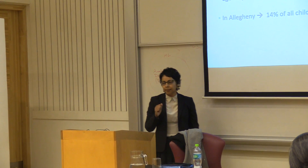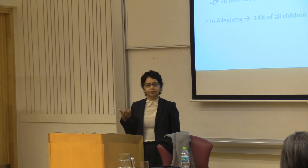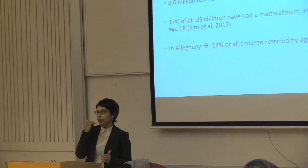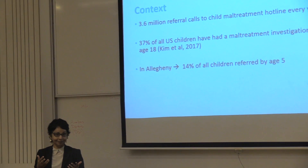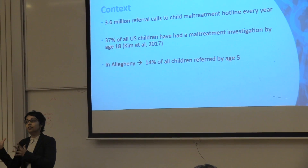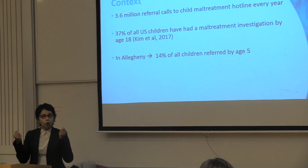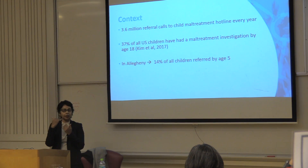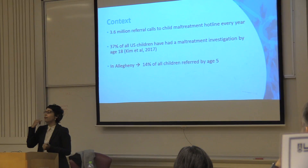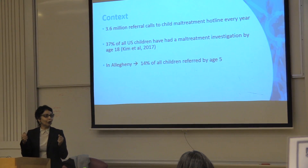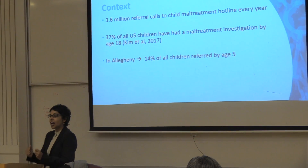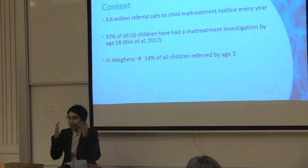The context here is the U.S. system, which has a child abuse hotline. A neighbor, family member, person in the street, or teacher can call to say they're concerned a child is being abused. In the U.S. there are about 3.6 million calls a year, and this number is increasing because of the opioid crisis. When a call comes in, there is a caseworker at the end of the line — often without much training — who has to decide whether to investigate the case or not.